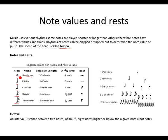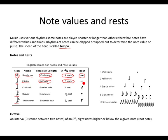A semibreve is an oval, not round shape, beat shaded on the side. It has a relative length of a whole note and in 4/4 time it has 4 beats. The semibreve rest looks like a bar facing down. The minim is an oval shape with a stem going up, not shaded. It has a relative length of a half note and in 4/4 time it has 2 beats. The minim rest is similar to the semibreve rest but faces up.